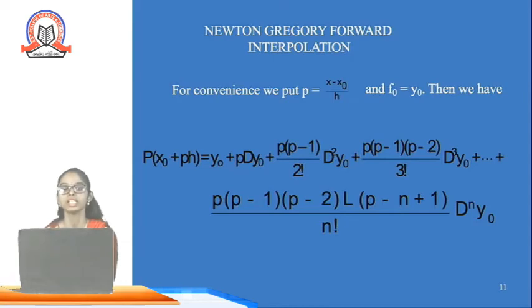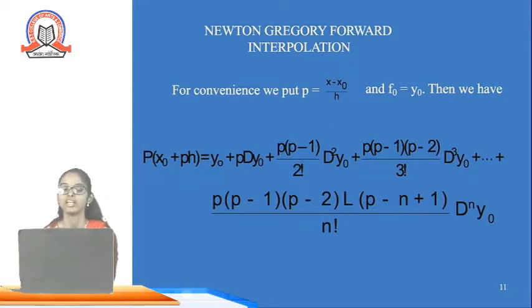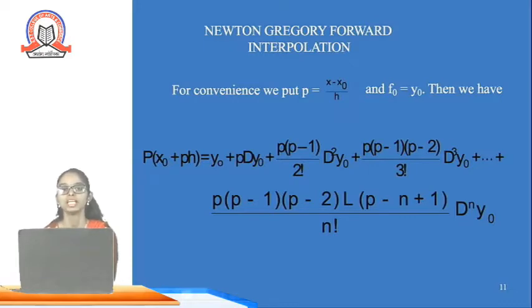The first method is Newton's Gregory forward interpolation. Find p = (x − x₀) / h, where f₀ = y₀. Then f(x₀ + ph) = y₀ + p·Δy₀ + [p(p−1)/2!]·Δ²y₀ + [p(p−1)(p−2)/3!]·Δ³y₀, and so on up to n terms.